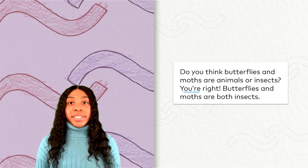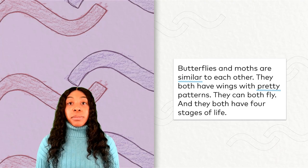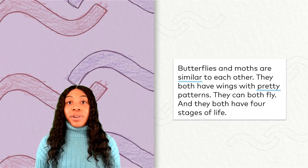Butterflies and moths are similar to each other. They both have wings with pretty patterns. They can both fly. And they both have four stages of life. We have two high frequency words: similar and pretty.